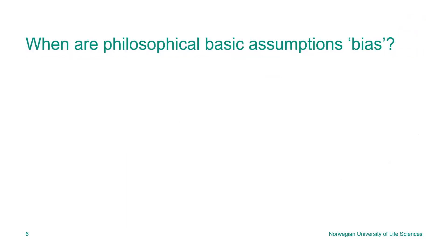When are these philosophical assumptions called bias? Not always. They're biased when they remain implicit. Sometimes scientists use a model and assume something philosophical in nature — for instance, they assume determinism in a model to predict population growth. That is not what we call a philosophical bias, because it is an explicit assumption that is then accounted for in the results.